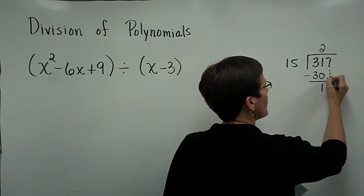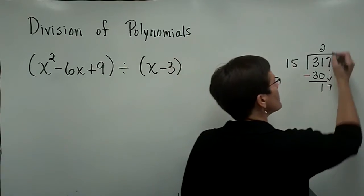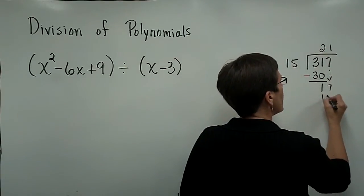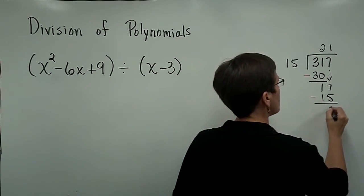And the next step here was to subtract the 30 from the 31, and that gave us 1, and we brought down the 7, and we did that process again. So 15 divided into 17 once, and 1 times 15 is 15, and we subtracted, and we had a remainder of 2.